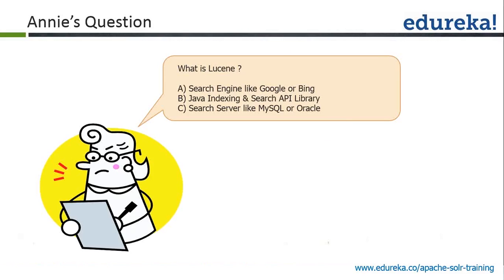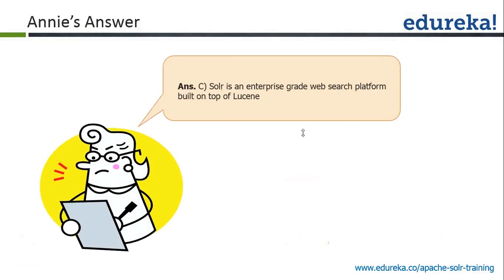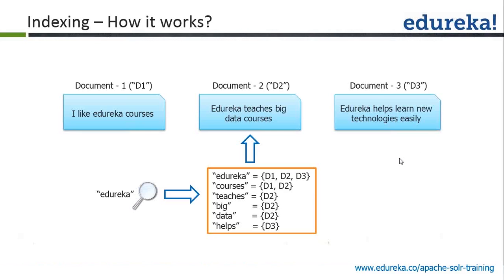You should now be clear that Lucene is not something like Google or Bing — it is a different search API library. Solr is an enterprise-grade web search platform built on top of Lucene. We have seen the basic search process, what Lucene is about, and how search and indexing work together. Let's look at a visualization of what indexing actually looks like.